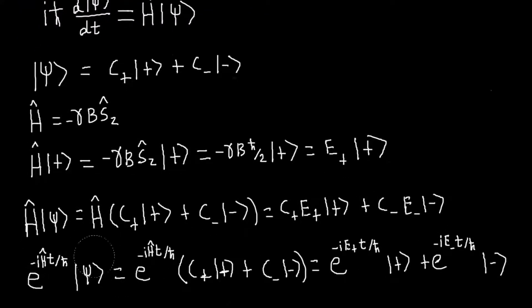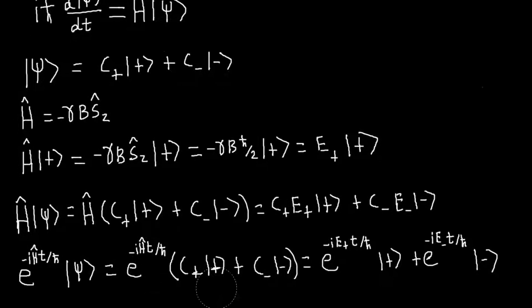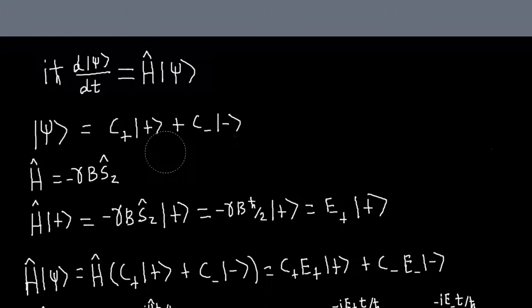Or even more simply, we can just use the time evolution operator, which again relies on me expanding my state in terms of the eigenkets of the Hamiltonian, because then I know that I can just replace this Hamiltonian operator when I multiply it through on each of these terms with the corresponding eigenvalue, and just solve my problem in one line, basically. So having our state ket expanded in terms of the eigenstates of the Hamiltonian makes our problem pretty much trivial to solve.